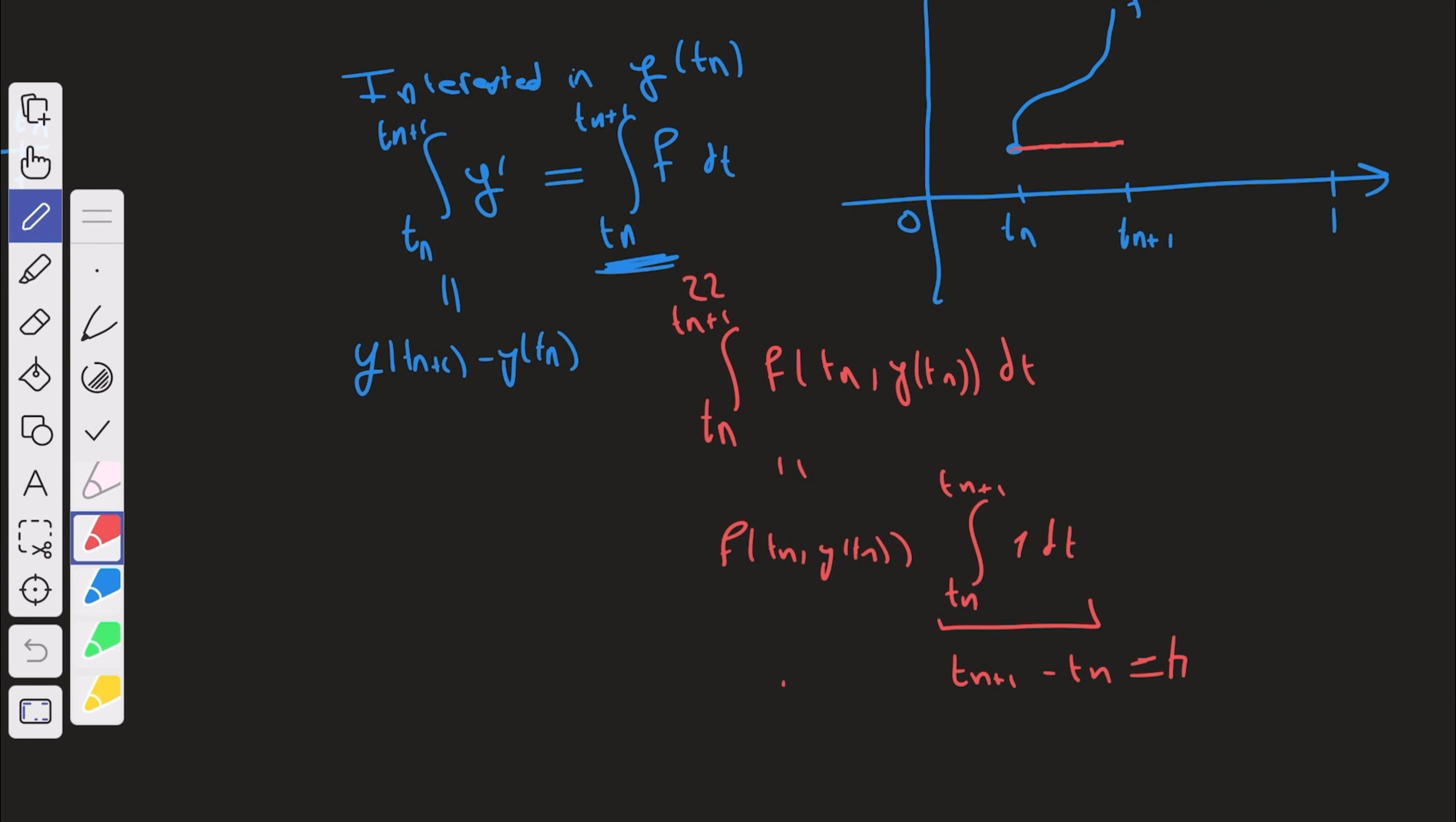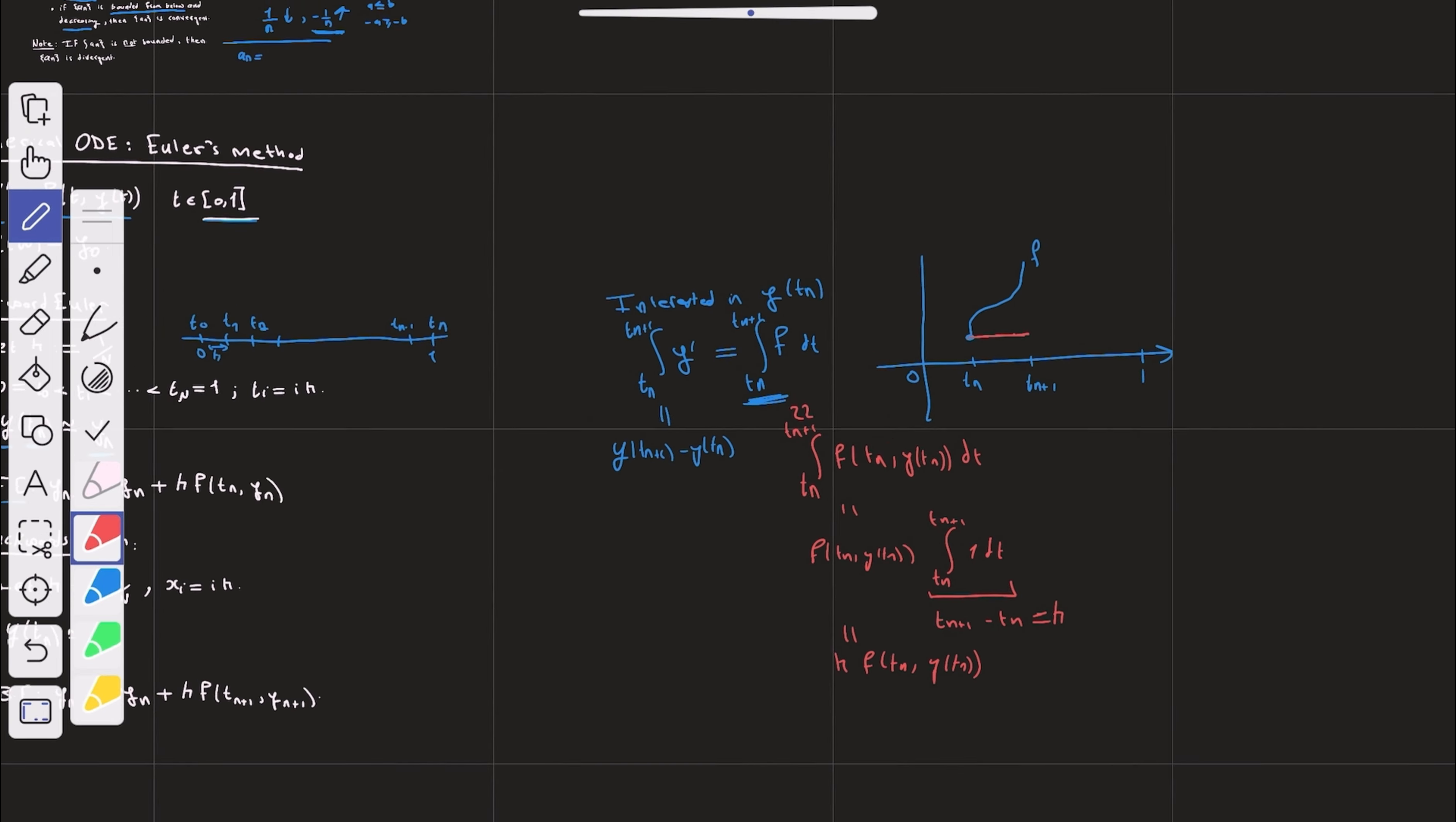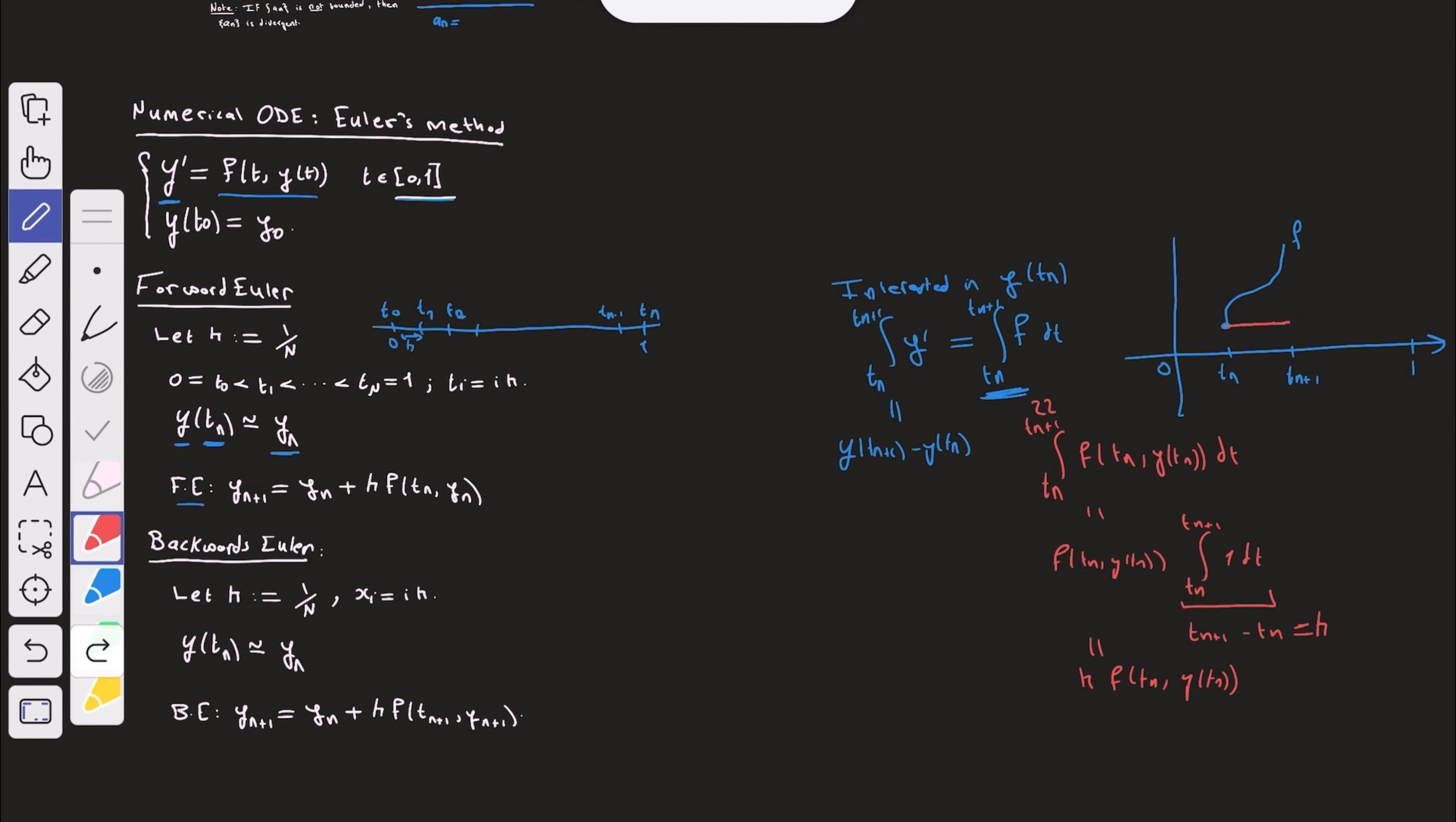So overall, this is just h times f of tn, y of tn. And if we approximate y at tn by y sub n, we actually get this method. You can actually compare the method here with what we have here. So this is the derivation of forward Euler's method.